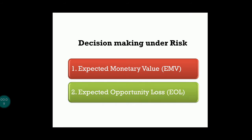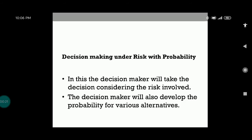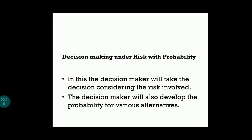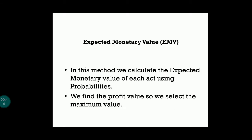In decision making under risk we have two different methods: the first is the Expected Monetary Value method, or EMV method, and the second is the Expected Opportunity Loss method, or EOL method. In decision making under risk with probability, the decision maker takes decisions considering the risk involved and develops probabilities for various alternatives.